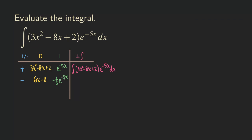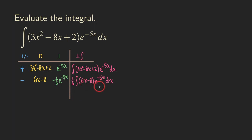We can write in the note column to track where we are, though it's optional if you already know how many iterations you need. The result from this first iteration — taking note that negative times negative gives positive — is (1/5) times the integral of (6x − 8)e^(−5x) dx. We still have a product of a polynomial and an exponential, so we need to continue down the table.